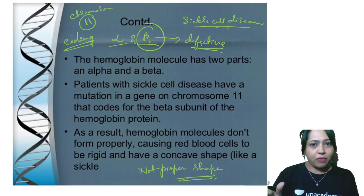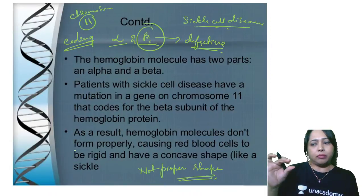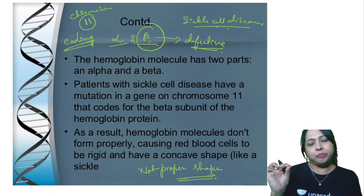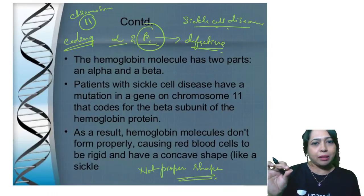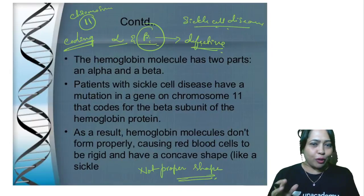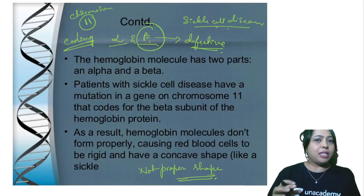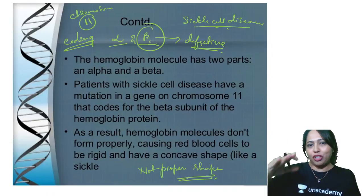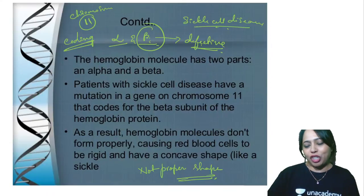RBCs look exactly like an Alpenlipé chocolate — not the size, I'm talking about the shape. They are concave in shape, disc-shaped.